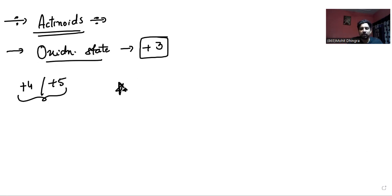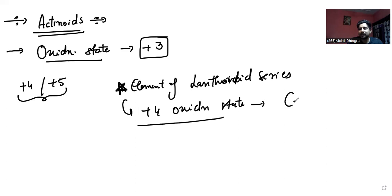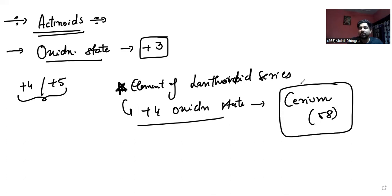There is a very important question asked in one-mark questions: which element of the lanthanoid series shows +4 oxidation state? That is cerium. Cerium has atomic number 58, and cerium is that element of the lanthanoid series which shows +4 oxidation state. Otherwise, the common oxidation state of lanthanoids is also +3, and the common oxidation state of actinoids is also +3.